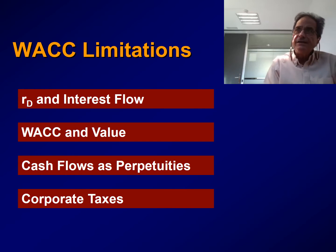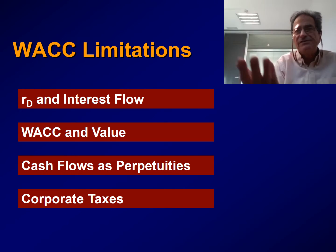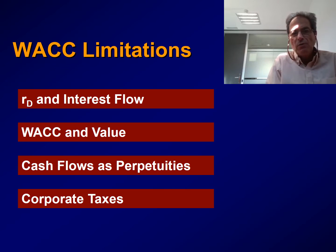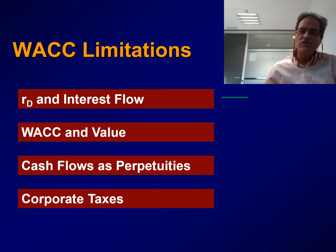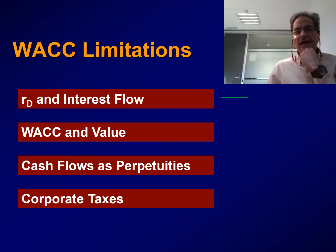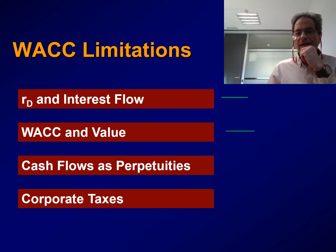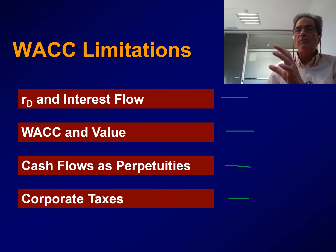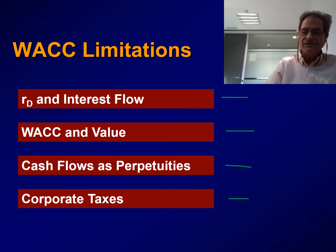Let's look now at the limitations that stem from these assumptions. We are going to focus on four limitations. First, the relationship between RD — the discount rate on debt — and the real interest cash flow. Second, the relationship between WACC and the value of the firm. Third, the assumption that cash flows are perpetuities. And fourth, that we have only corporate taxes and a single corporate tax rate TC.